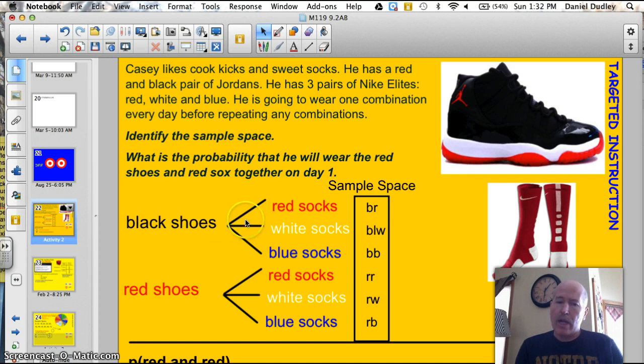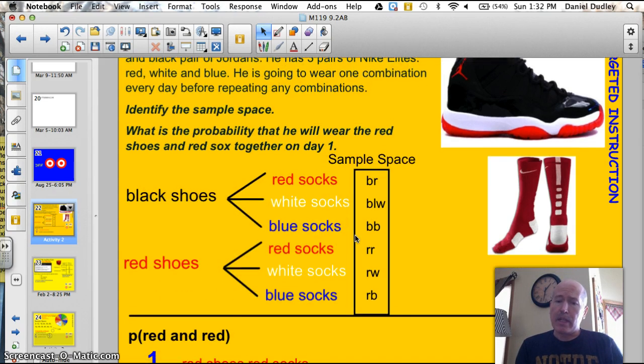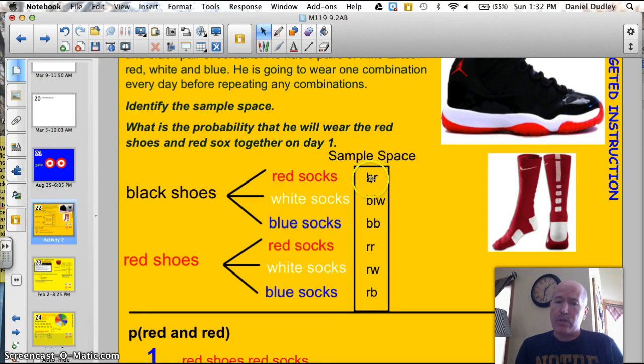So what I used here is I used a tree diagram. I got his black shoes and I got his red shoes and then I got his red socks, white socks, and blue socks because he could wear black shoes and red socks, black shoes and white socks, black shoes and blue socks, correct? And then I did the same thing for the red shoes. Then I took and made a little list for the sample space. Black shoes, red socks, and used initials to abbreviate it. So I had a total of six possible combinations.